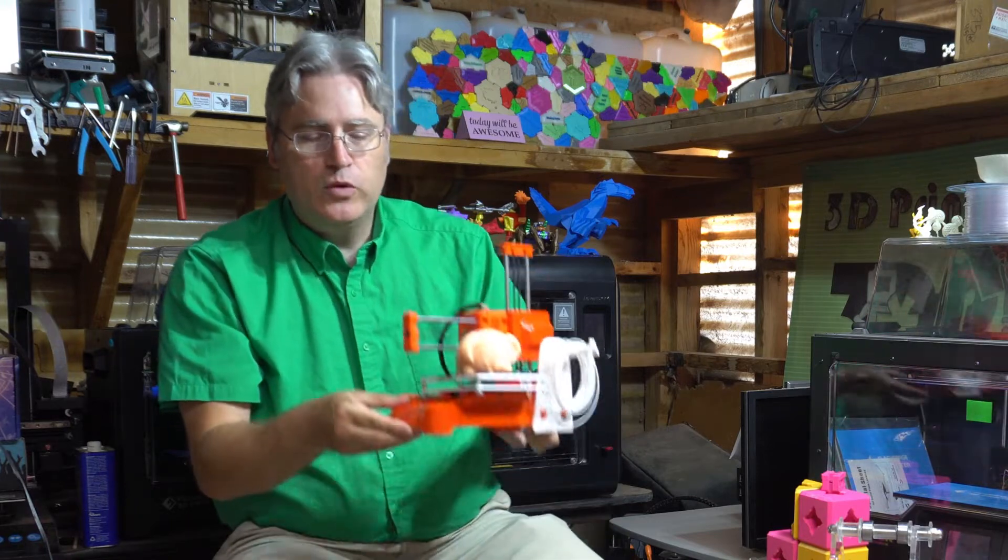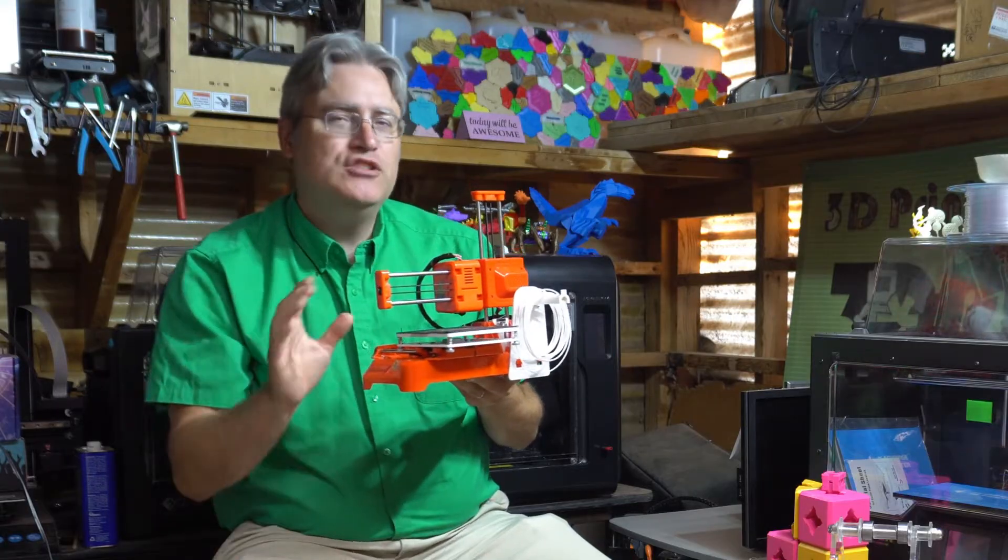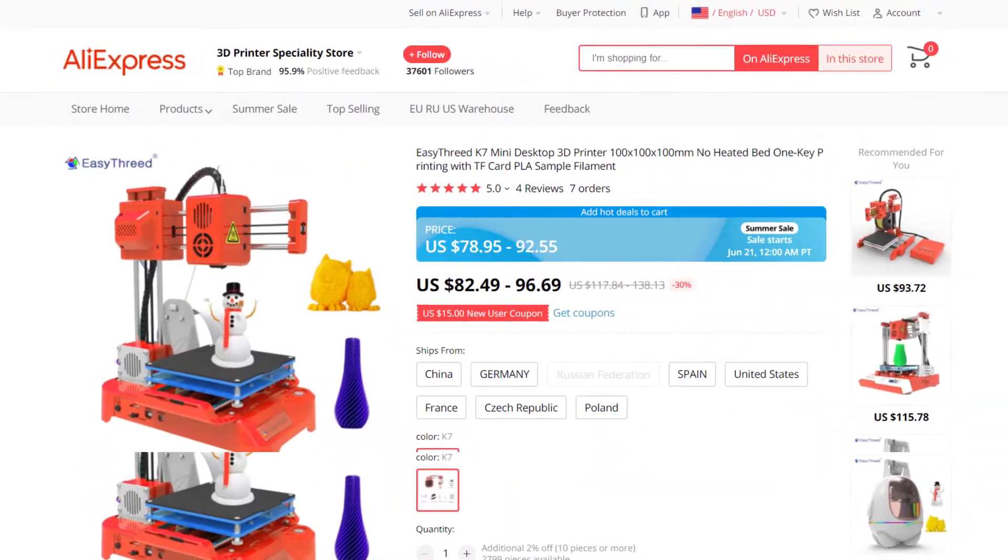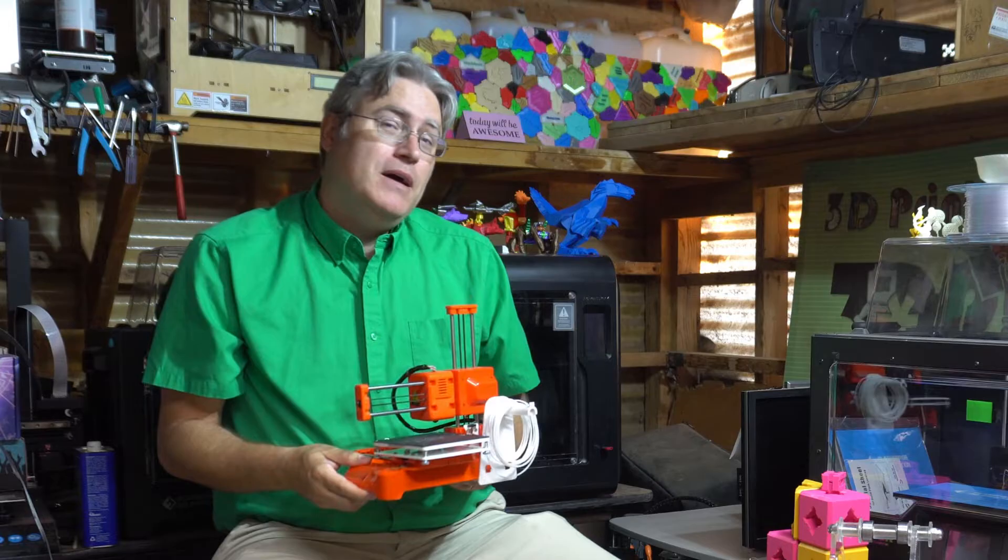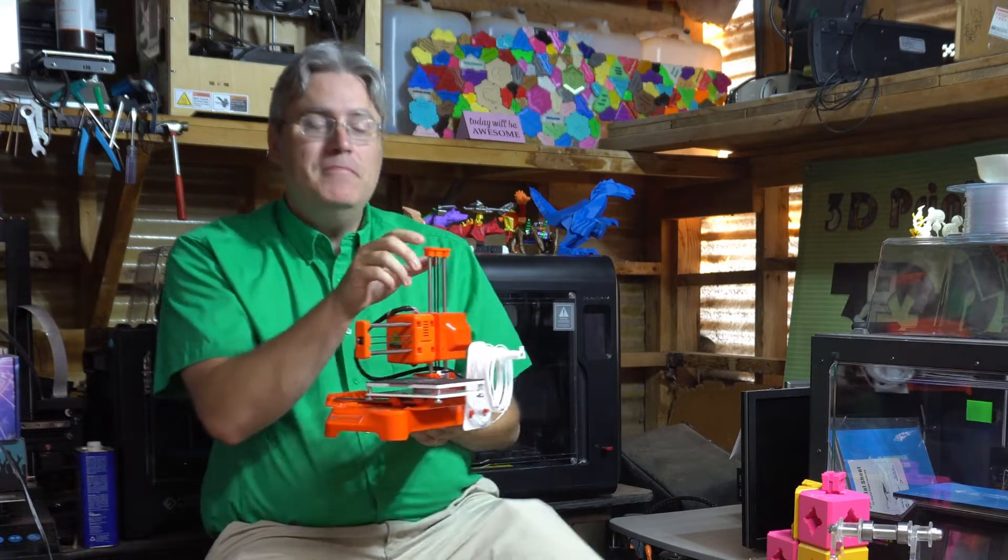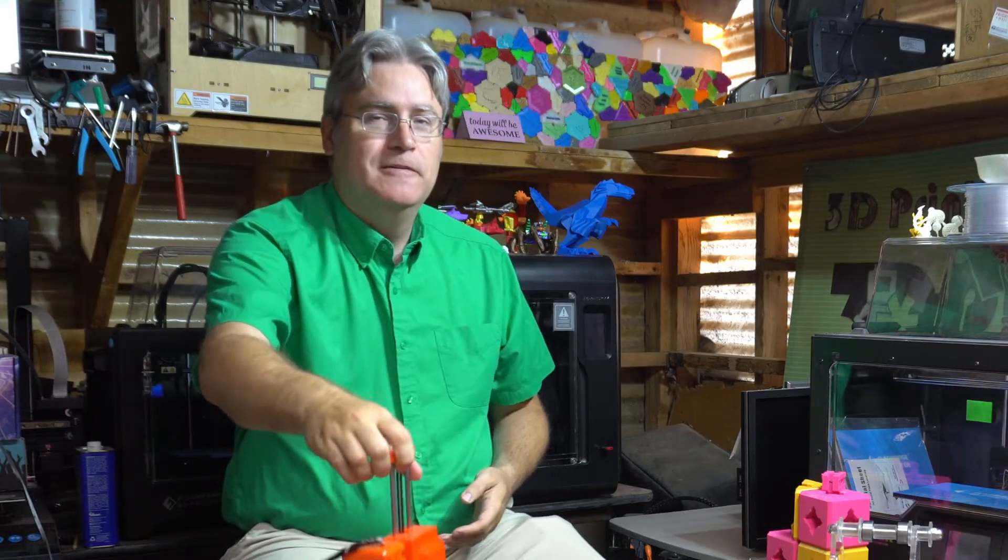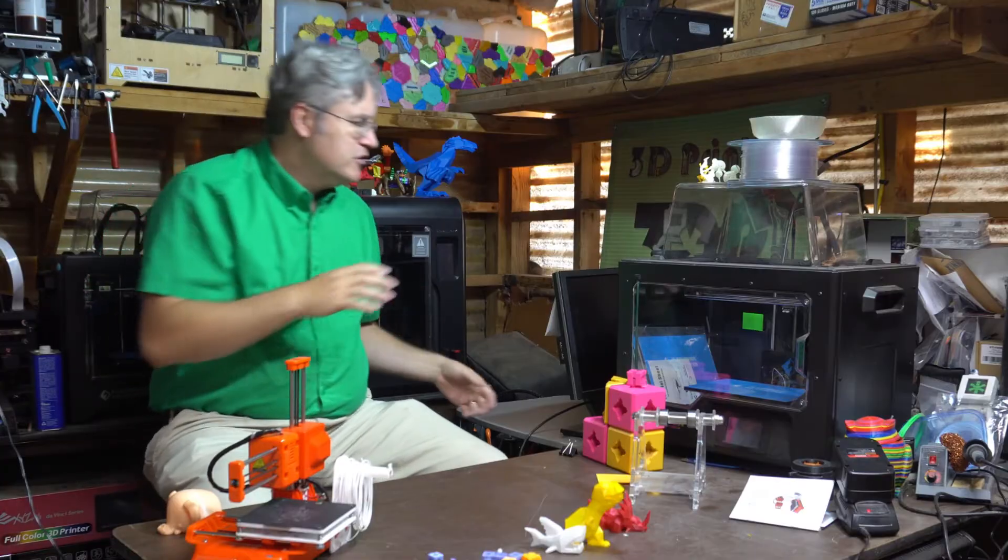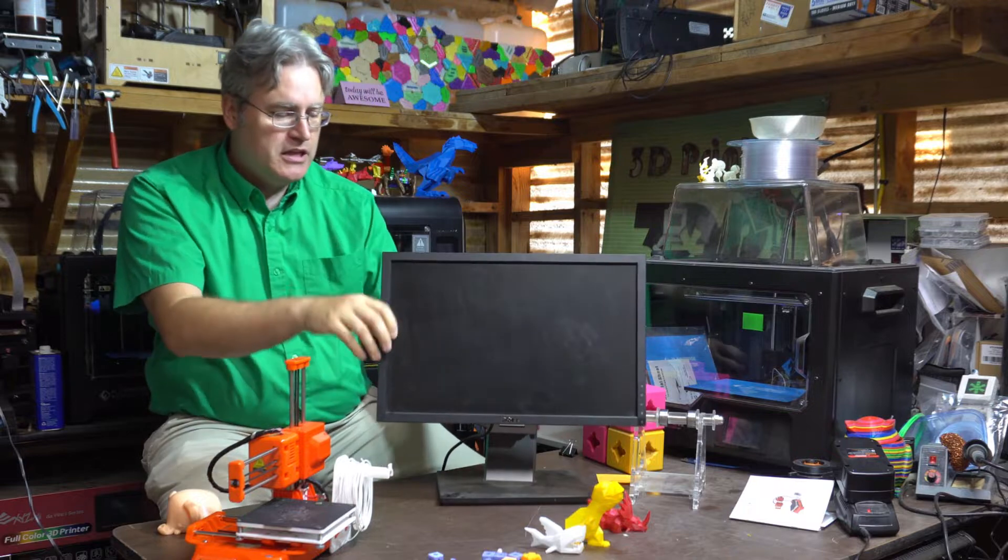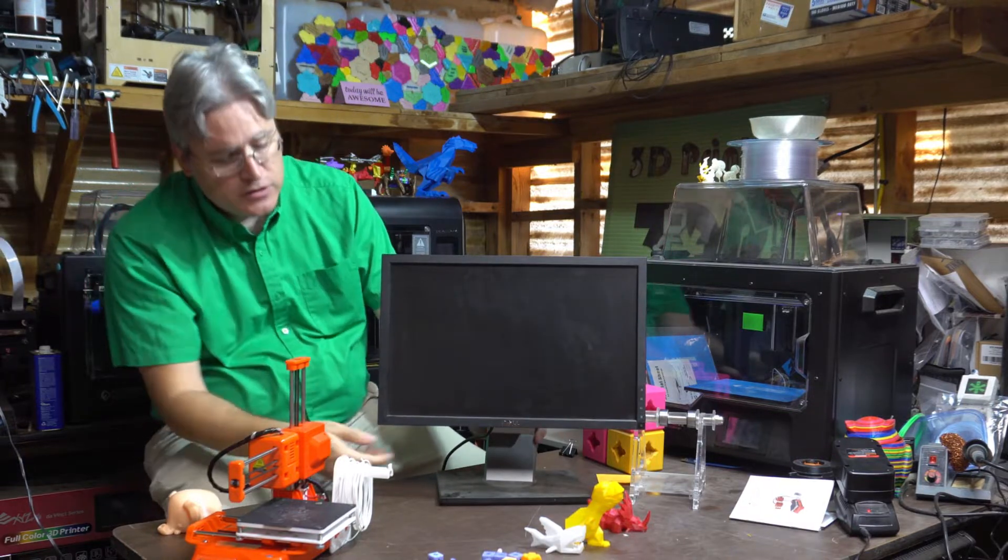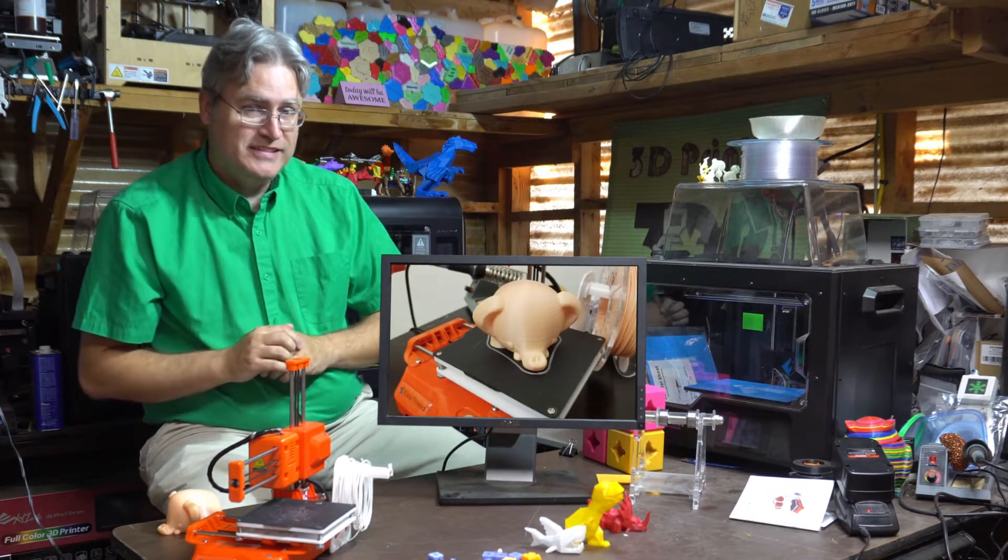This is the Easy Threed K7, their newest budget 3D printer. And if you buy it on their AliExpress site, it only costs $80. But I thought, I'll at least check it out, and maybe it'll be good enough to at least have the novelty of it. And what I discovered surprised me. In fact, I had such a good time with this printer that I just took a lot of pictures and videos as I was working on it. Let's pull out the old slideshow, and let's watch as we check out my adventures with the K7.